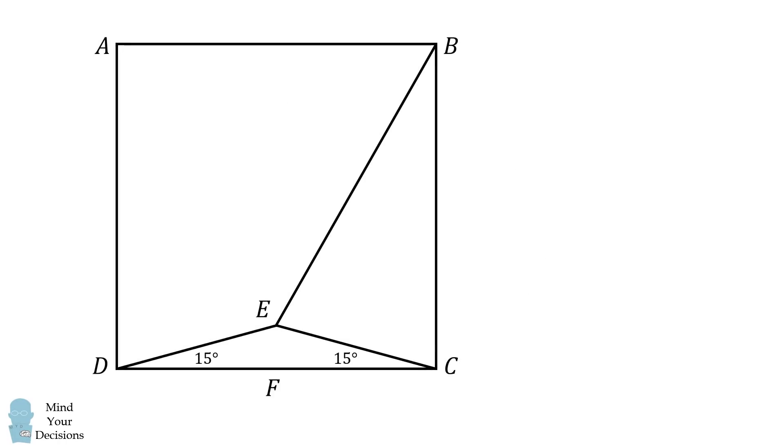Now let's solve the problem using trigonometry. Suppose that F is the midpoint of DC, and G is the midpoint of AB. FG will be the perpendicular bisector of DC and the perpendicular bisector of AB. Since E is equidistant from the vertices D and C, E will be along FG.